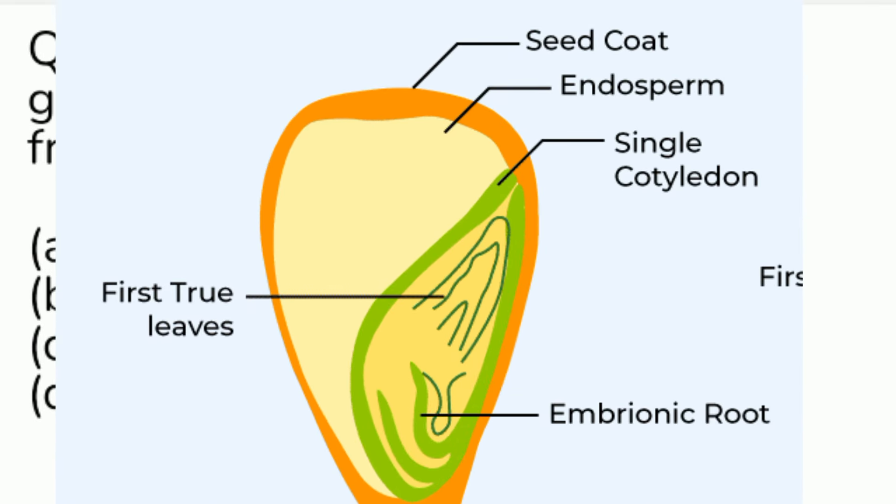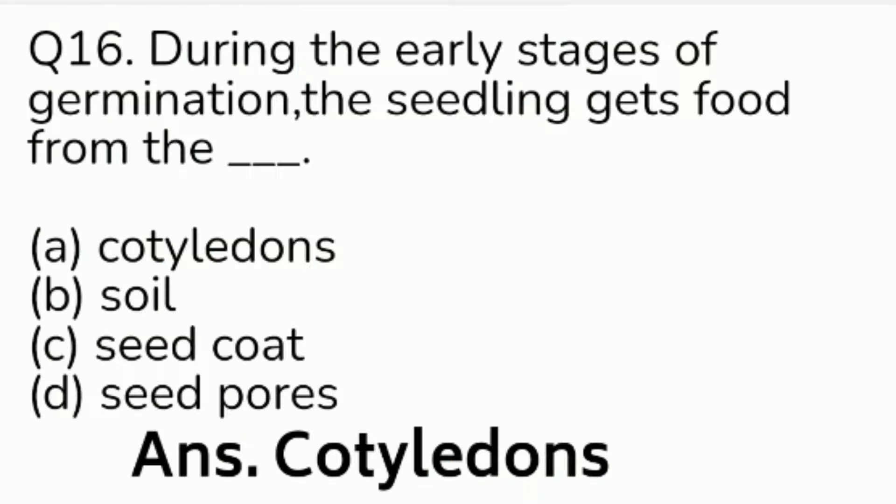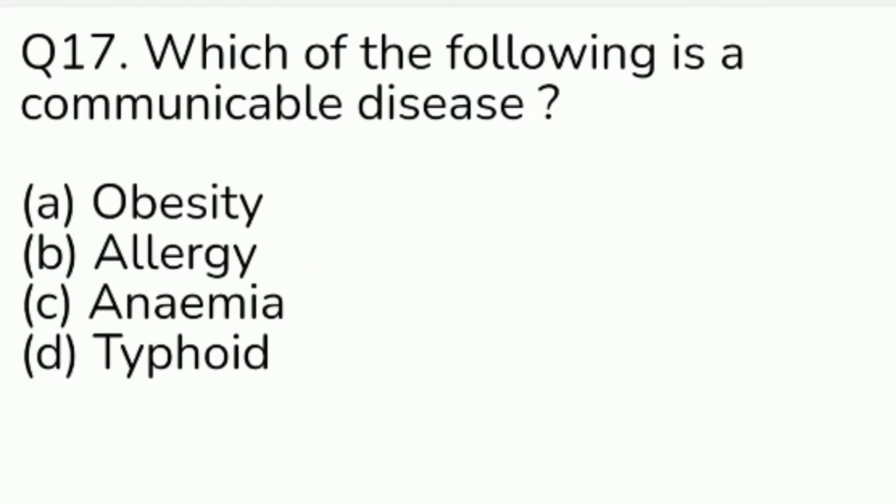Question number 17. Which of the following is a communicable disease? Option A: obesity. Option B: allergy. Option C: anemia. Option D: typhoid.